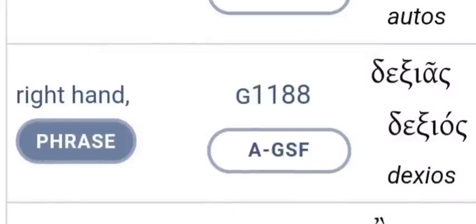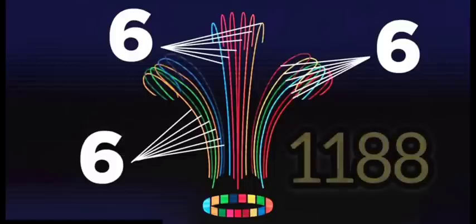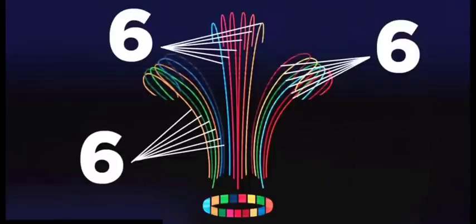So, let me get this straight, there is 1,188 strokes behind King Charles, and that number in Greek means the right hand, which is in the Mark of the Beast's verse.